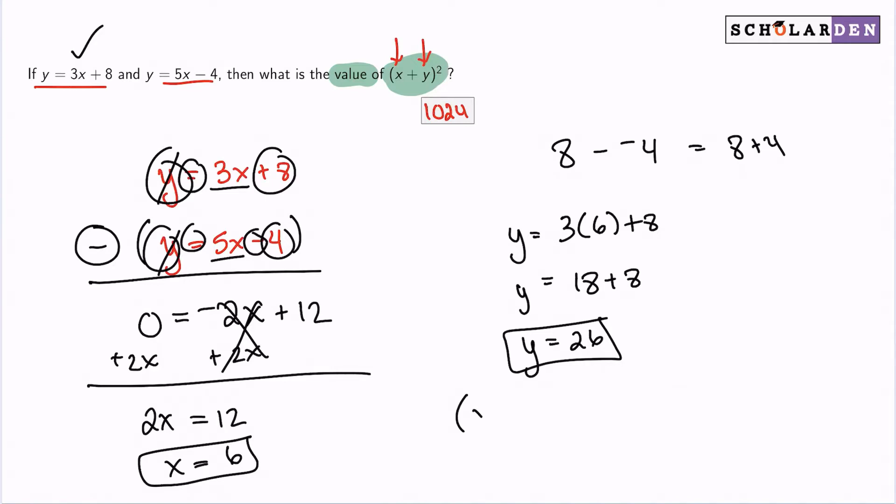x plus y squared is equal to 6 plus 26 squared. From there, 6 plus 26 is 32, and 32 squared is 1024.